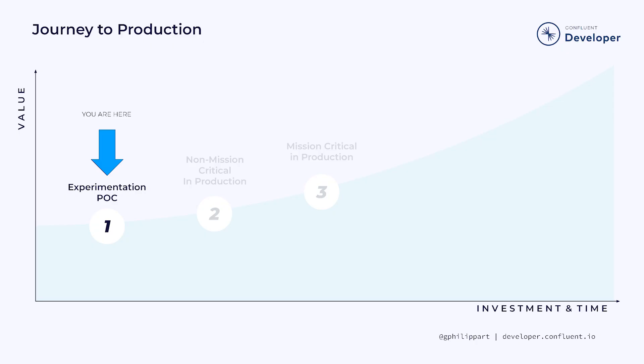All right, let's get started. This is what a typical data in motion journey looks like. The arrow is where you currently stand, experimenting with a POC at level one.